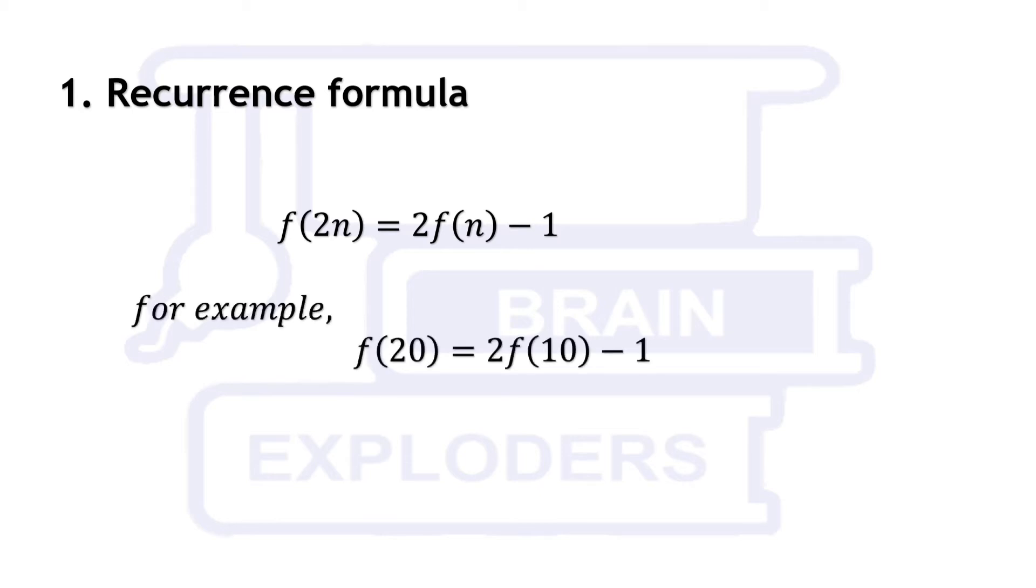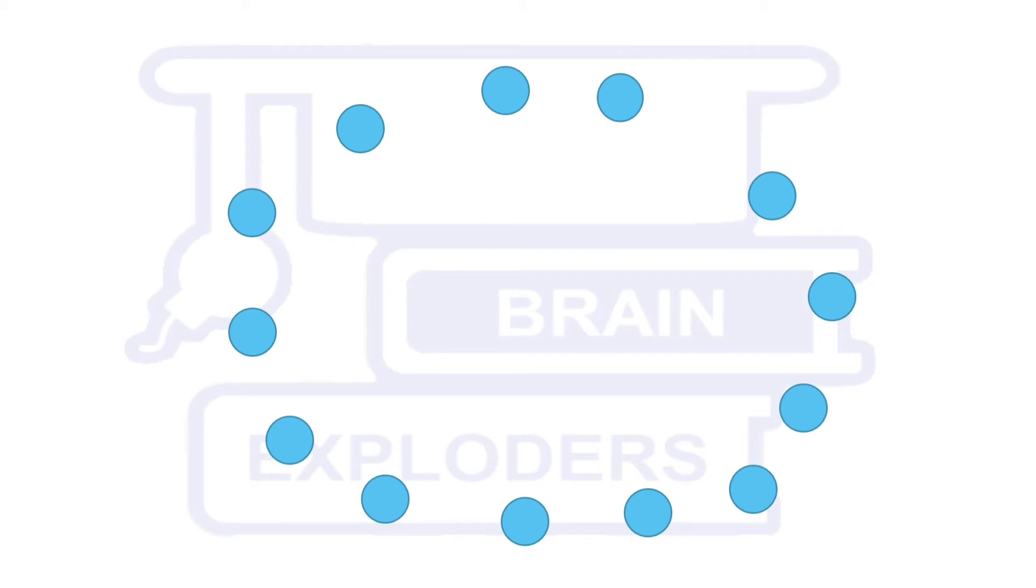For example, f(20) equals 2f(10) minus 1 and f(10) equals 2f(5) minus 1. 5 is an odd number. Therefore, it cannot be calculated with this formula. It works only for even numbers. But with a slight variation in our logical model of the problem, we can find a recurrence formula which can be used for odd numbers.